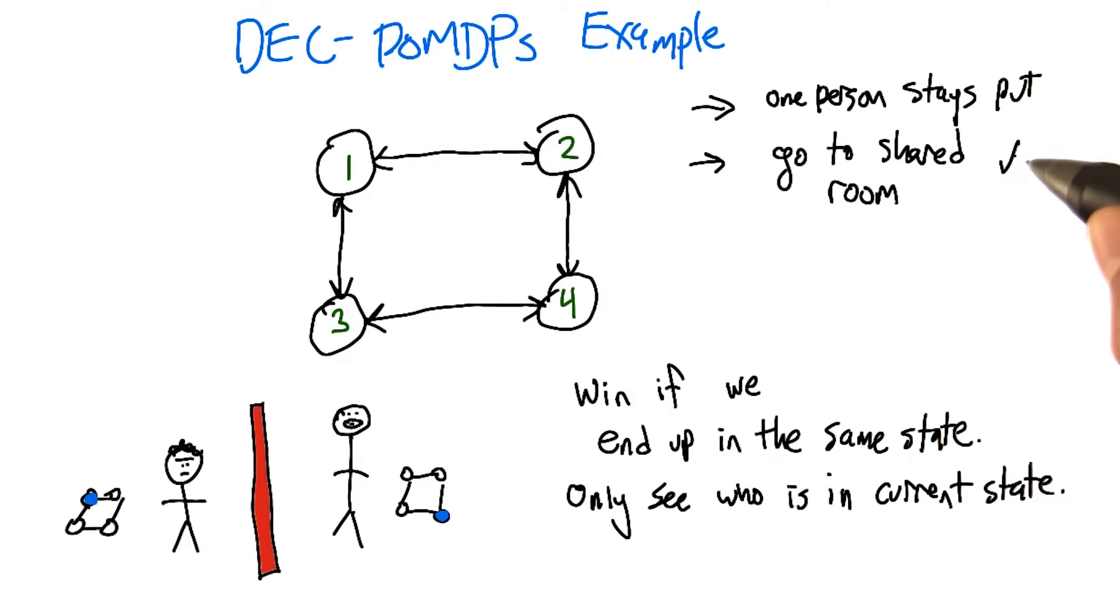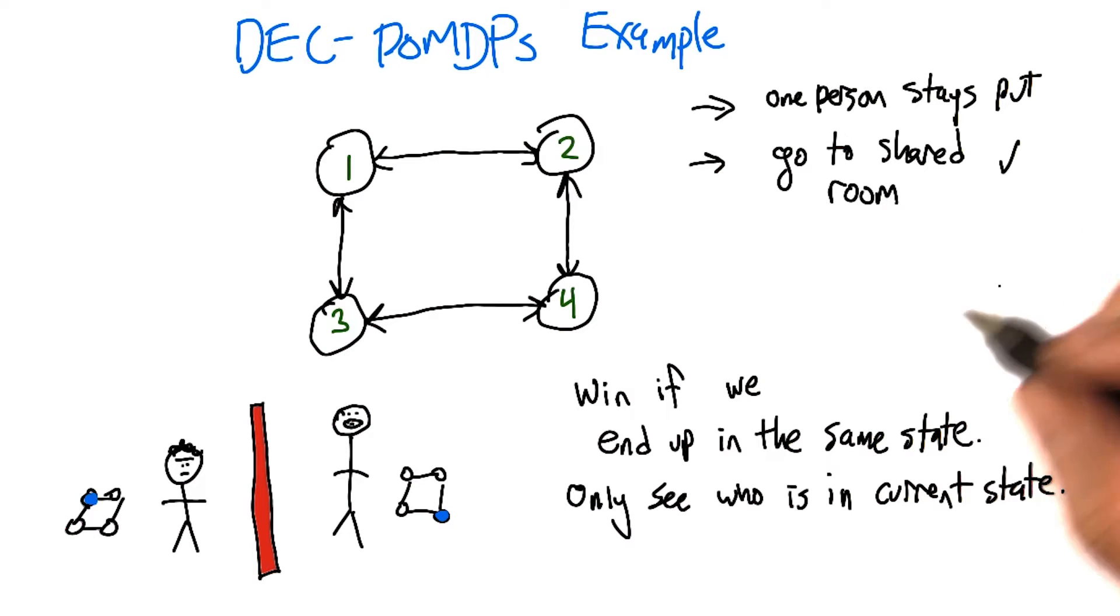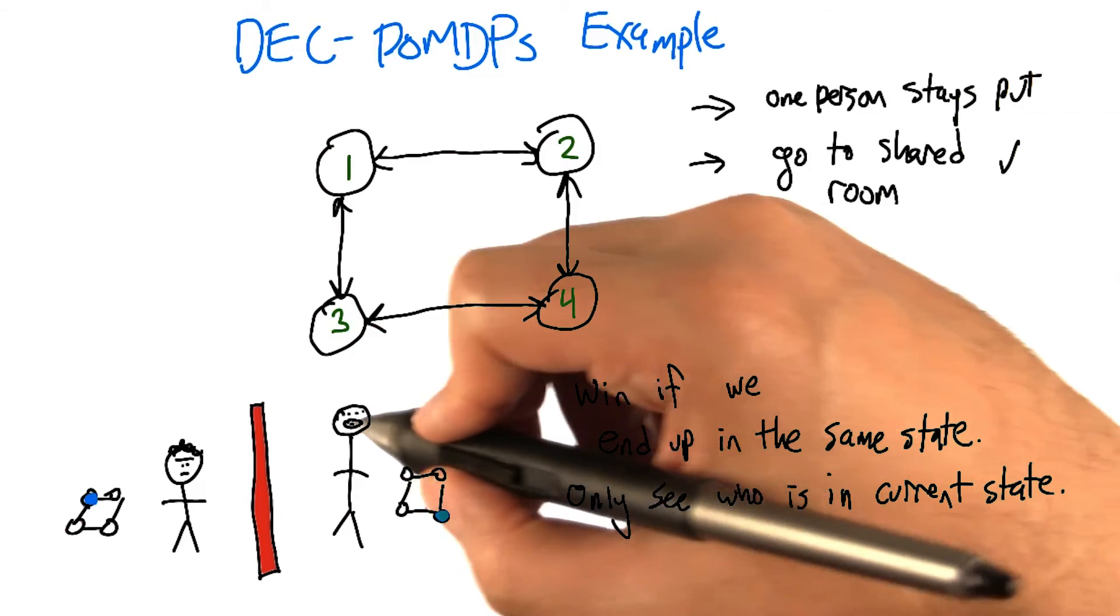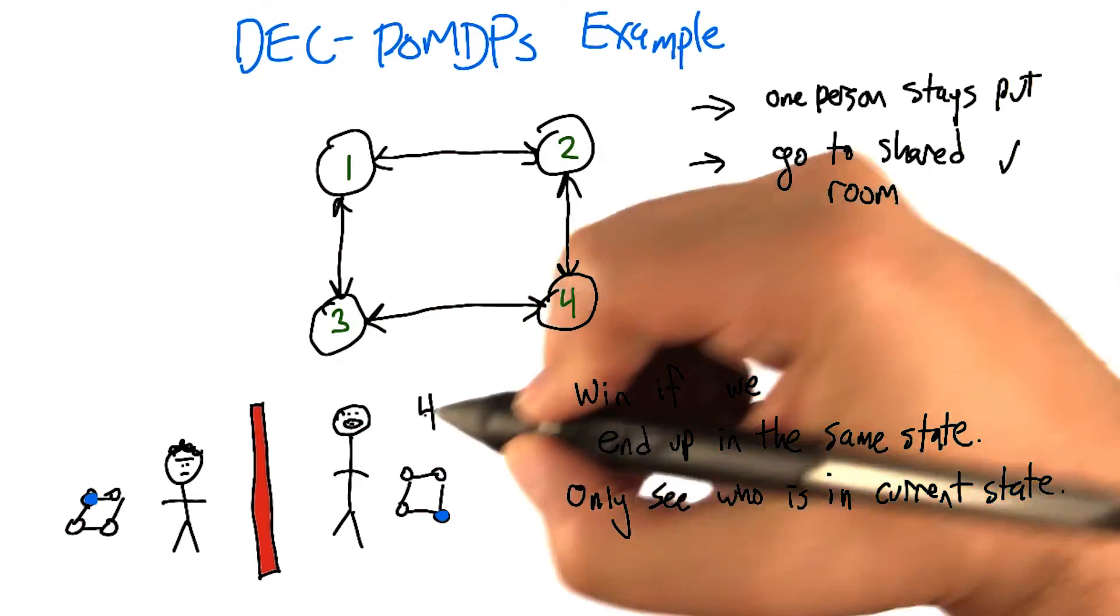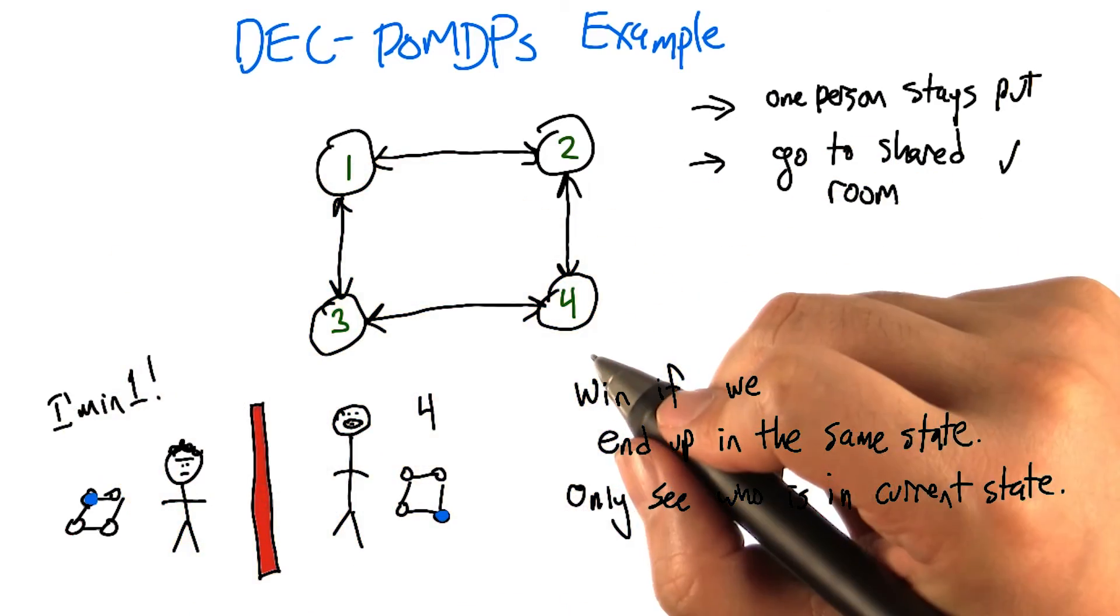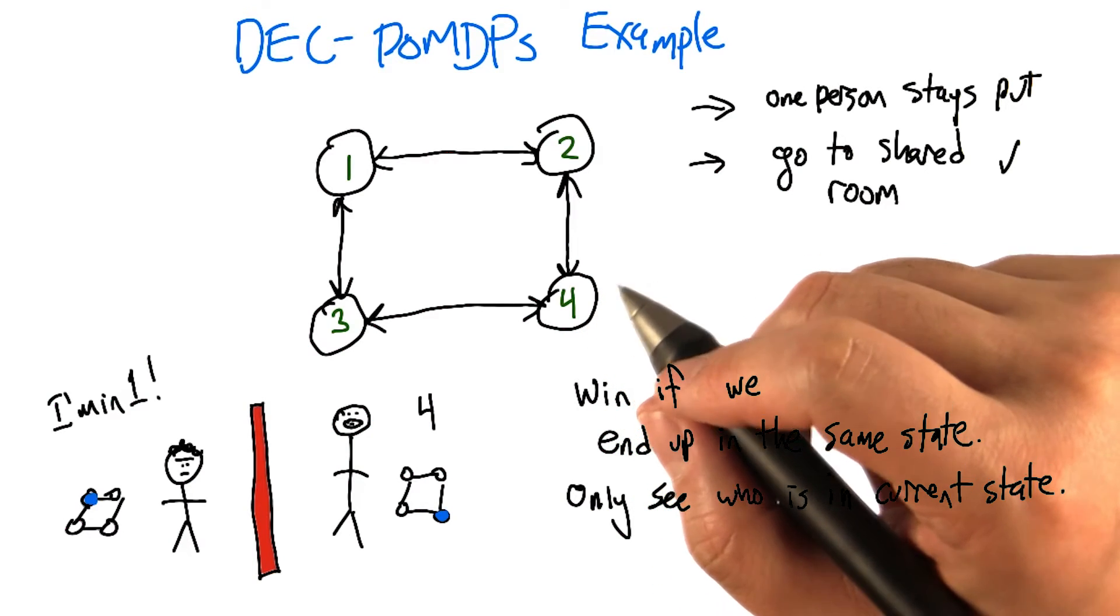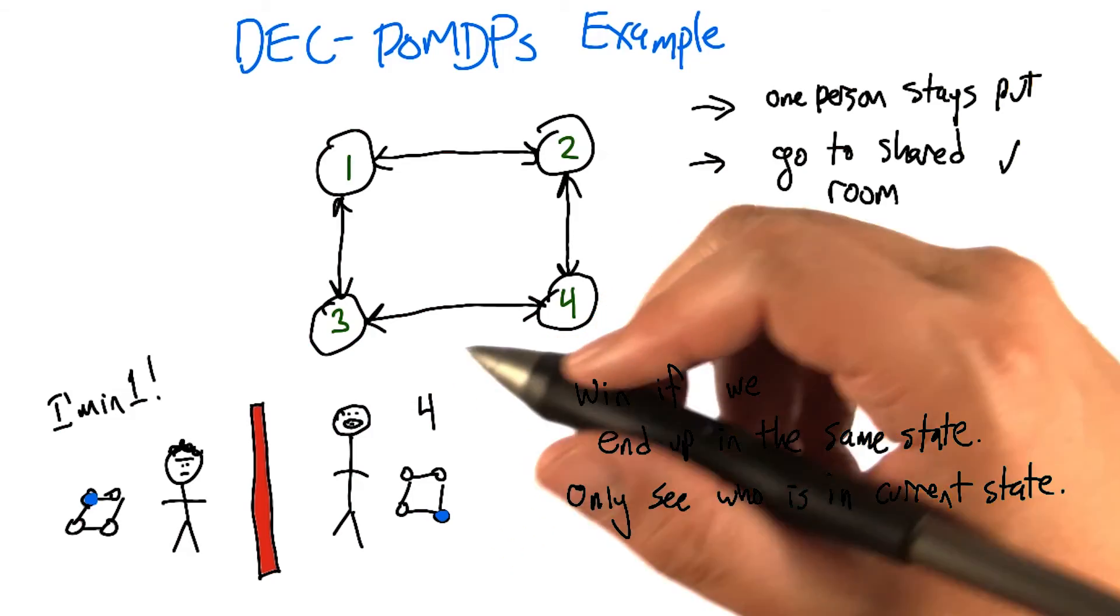So we decide in advance that we're going to converge on room three and you wake up and you find you're in room four to start, but I don't know that, but I know what room I'm in, and now we both get to choose an action. Right, and I would choose the action left, assuming we aren't in the same room.